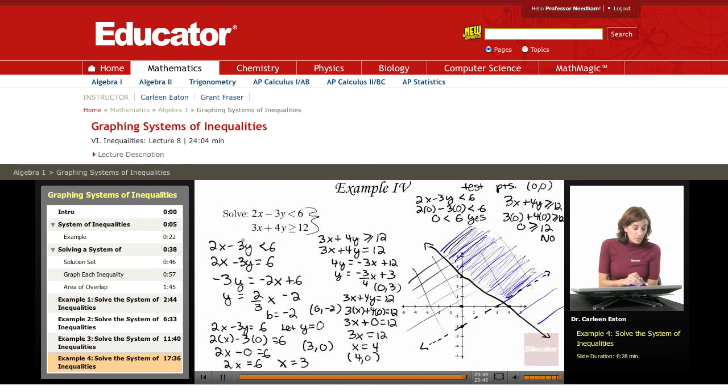So in this example, we graphed each inequality, shaded it in so that we could see the area of overlap, which is the solutions for the system of inequality. So today on educator.com, we discussed graphing systems of inequality. See you soon.